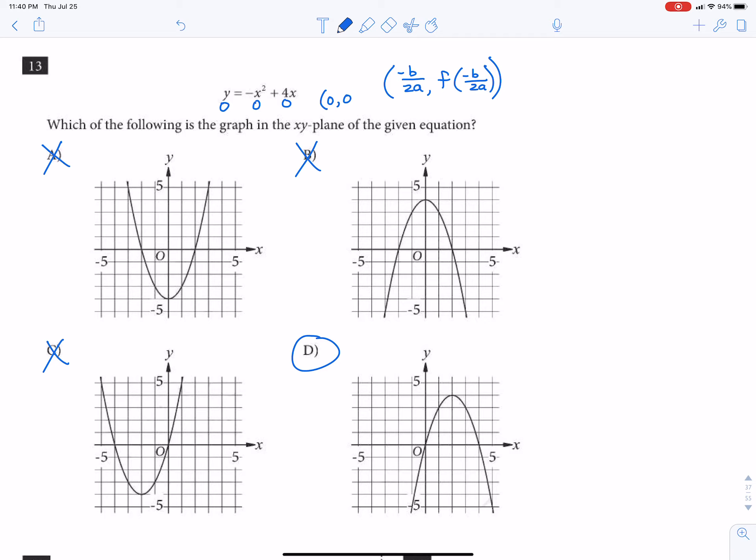So the graph needs to go through (0,0). If I uncross everything out, A does not go through (0,0), B does not go through (0,0), C does and D does.